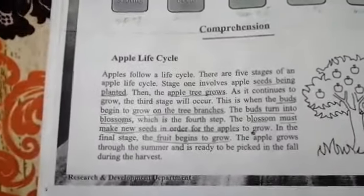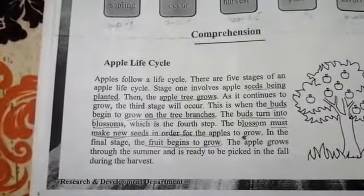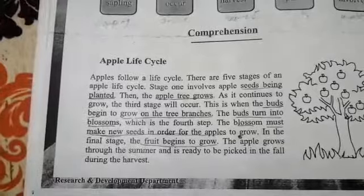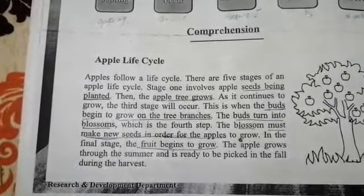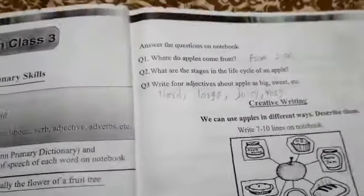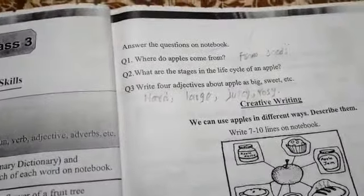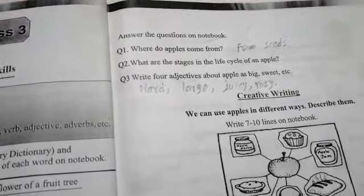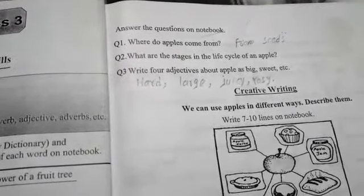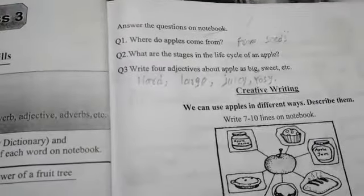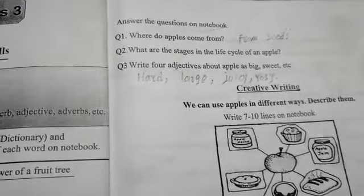You can see here, I have underlined all the stages. The next question is: write four adjectives about apple. Big, sweet, large, juicy, and rosy.